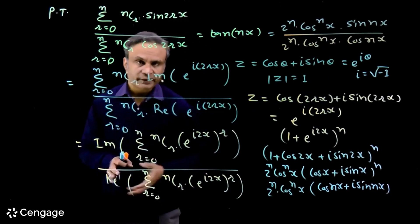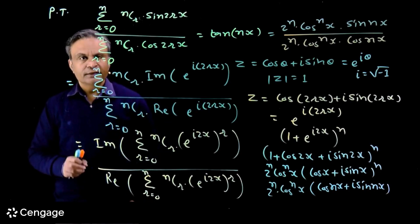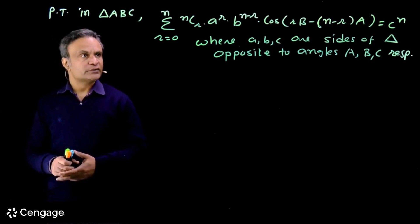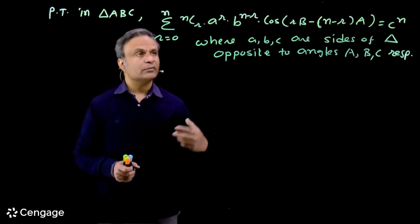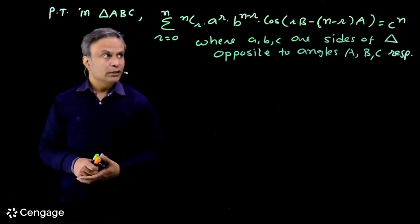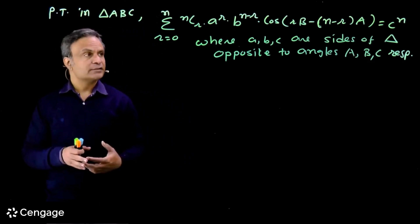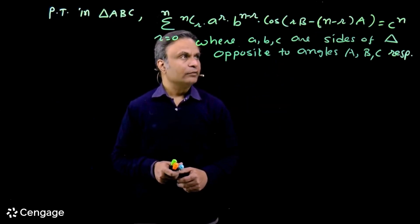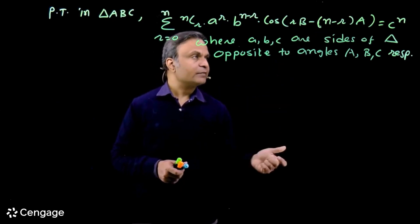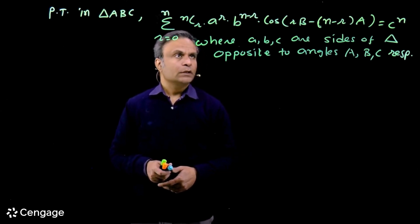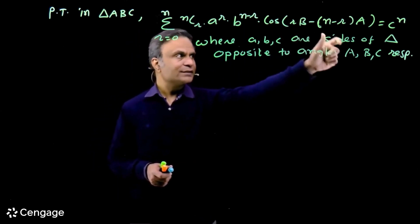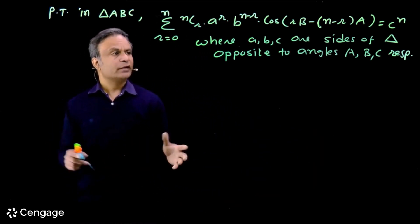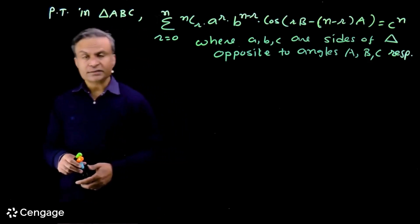So here we have one very interesting use of the polar form of complex numbers. Let us take one more question. We have to prove that in triangle ABC, the sum of the series sigma of nCr · a^r · b^(n-r) · cos(rB − (n−r)A) for r = 0 to n equals c^n, where a, b, c are the sides of the triangle opposite to angles A, B, and C respectively.